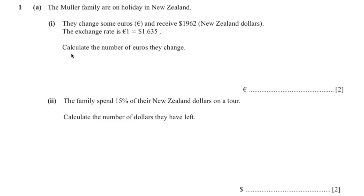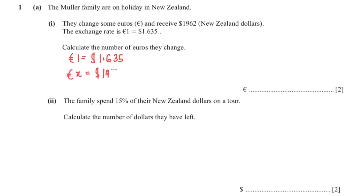In this question they want us to calculate the number of euros that has been converted. First I'm going to write down the exchange rate, which is 1 euro equals 1.635 dollars. Since we're trying to find euros, I'm going to label that as x, which equals 1962 dollars because it's given in the question.